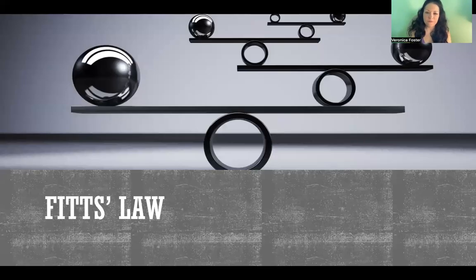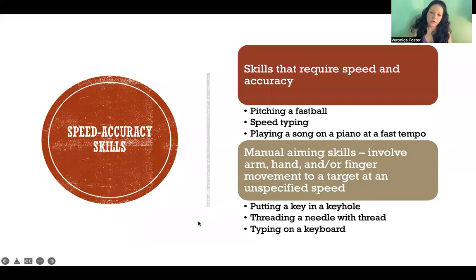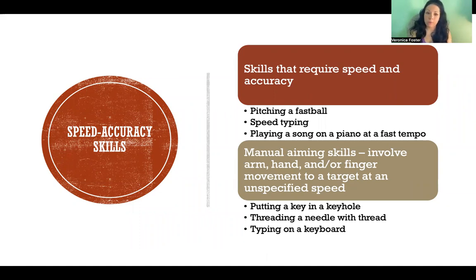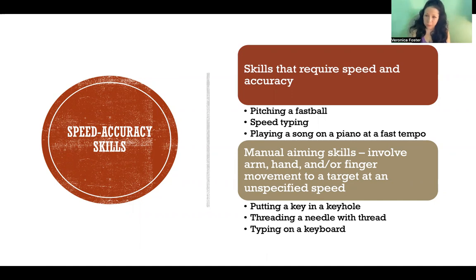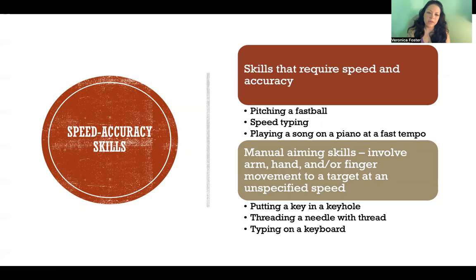In this video, I'm going to talk about Fitts Law. Fitts Law applies to speed and accuracy skills. When we talk about speed-accuracy skills, we're referring to skills that require both qualities — something like pitching a fastball where you want to pitch as fast as possible, but it also has to be accurate. Other examples include speed typing and playing a song on the piano at a fast tempo — anything where the movement needs to be both quick and accurate.